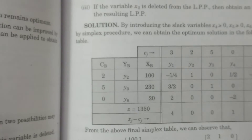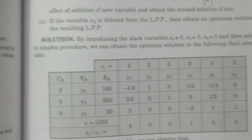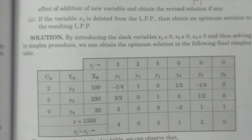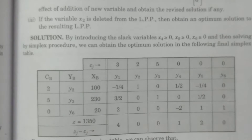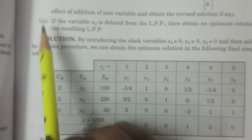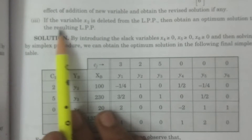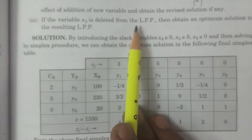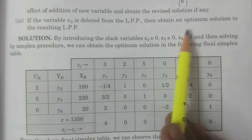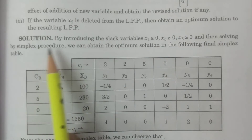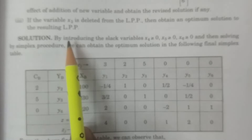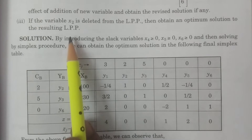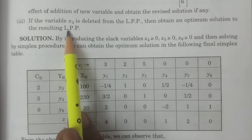Now, question number 3 — refer to question number 3 here. The third question: if the variable x2 is deleted from the LPP, then obtain an optimum solution of the resulting linear programming problem. This is what the third question asks.